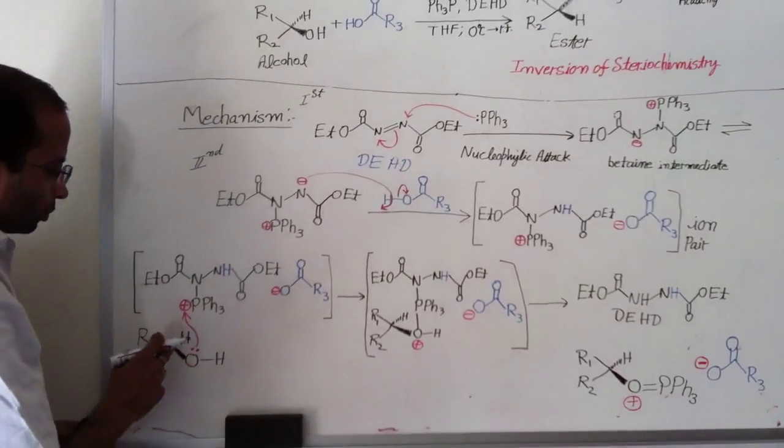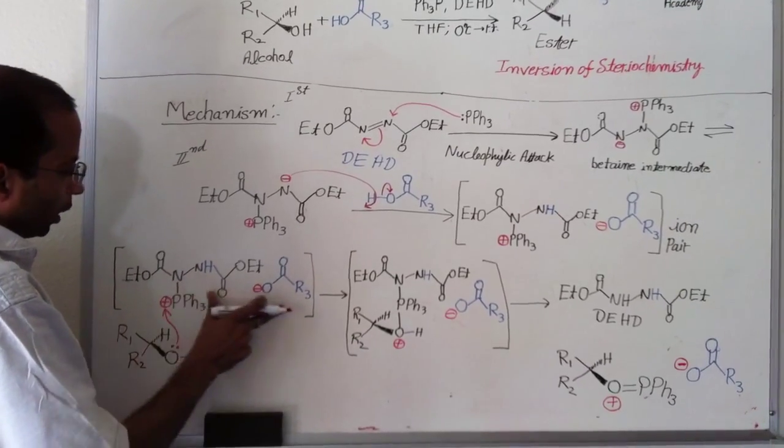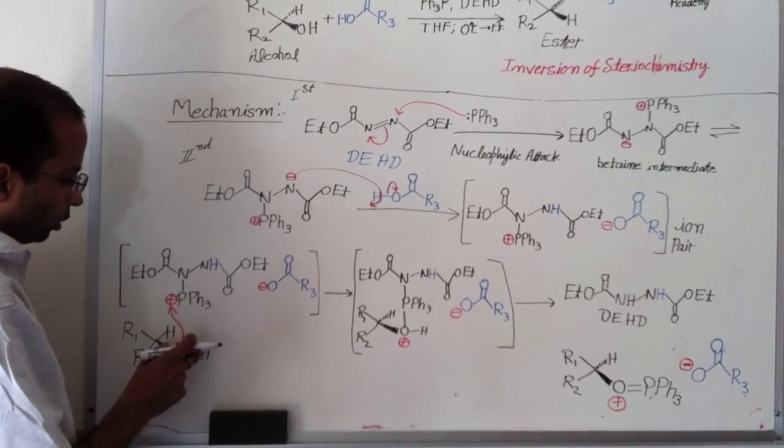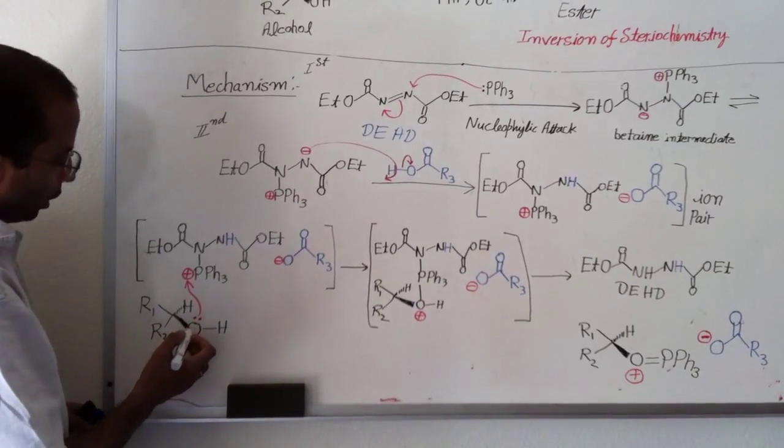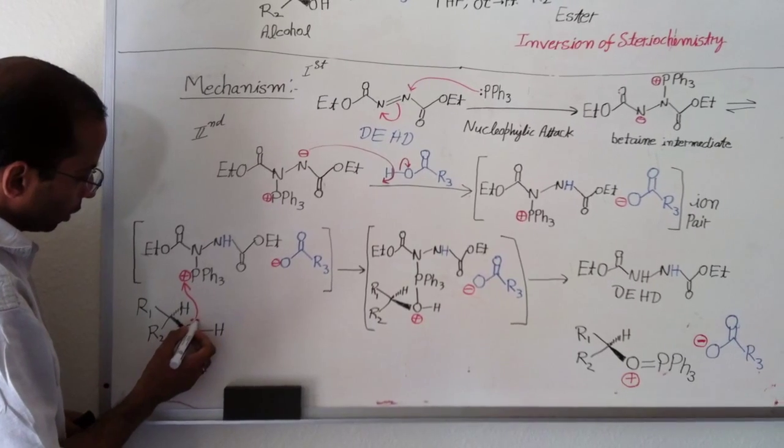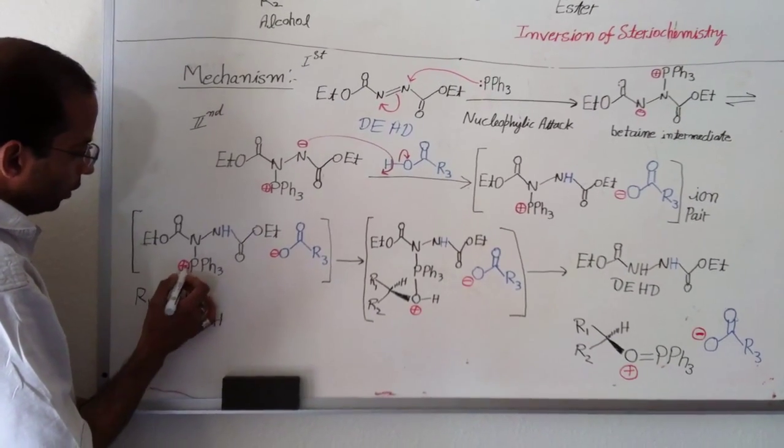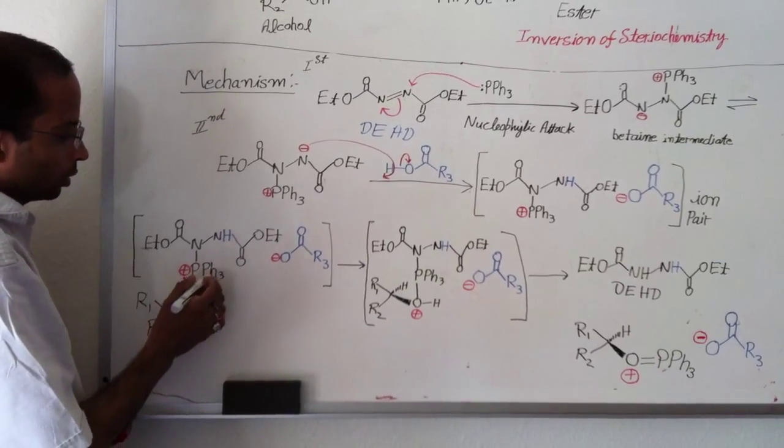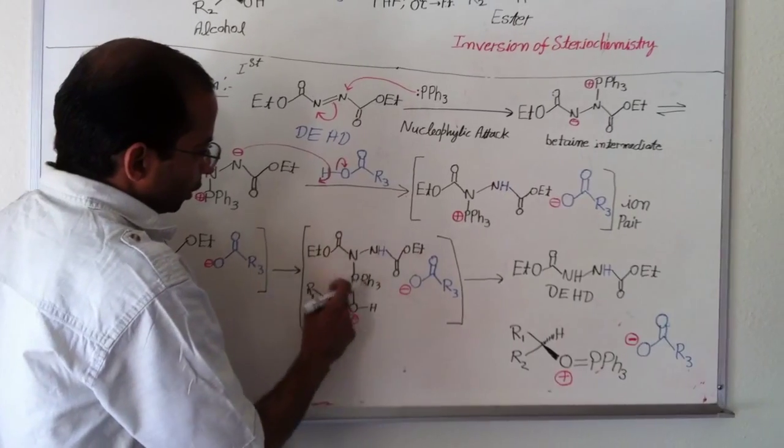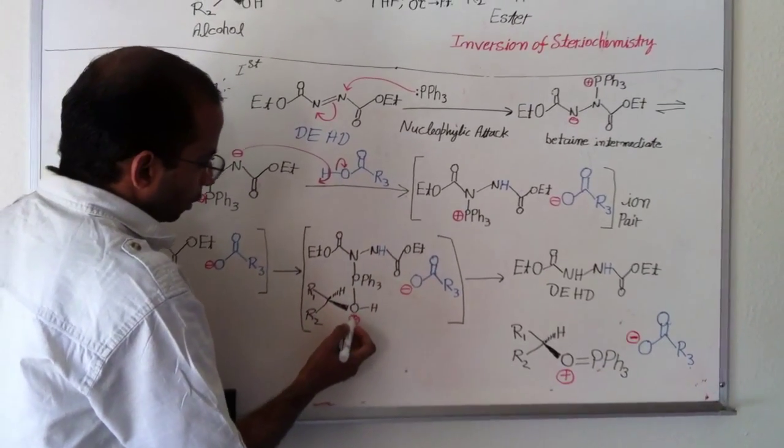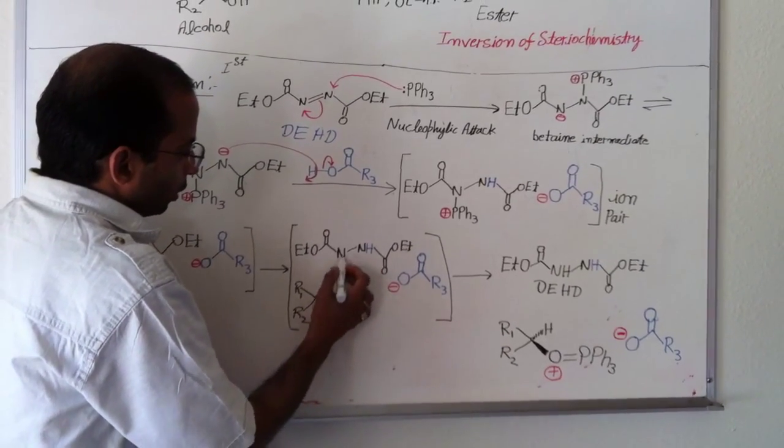And the next step, once again, this ion pair can absorb another proton. But before that, alcohol attacks. This alcohol, electrons from the alcohol attack to the triphenylphosphine because it has positive charge. And then, it forms this intermediate where now oxygen gets a positive charge.